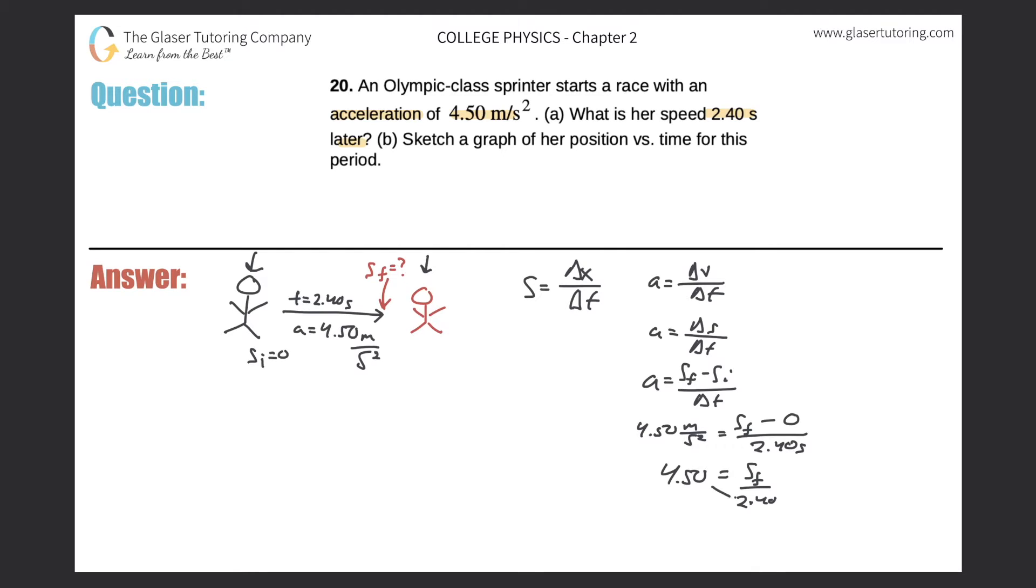Just do a cross multiplication here. Take out the calculator, 4.5 times 2.4, so it comes out to 10.8. And we have three significant figures, so that works out. This is meters per second, and that's the final speed when the sprinter reaches a time of 2.40 seconds.